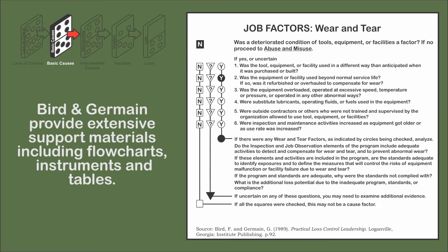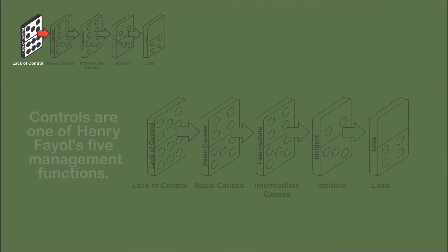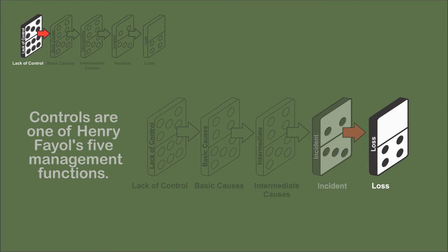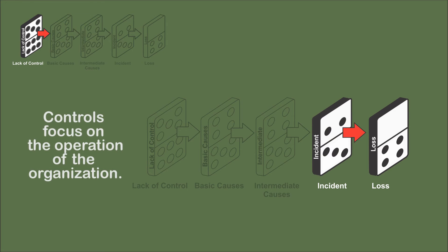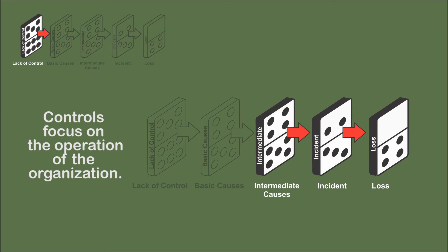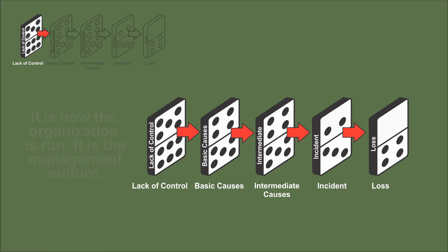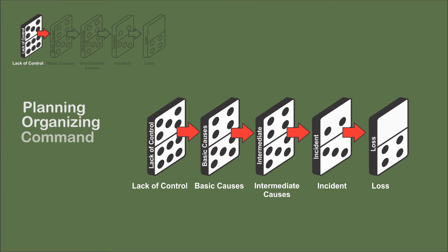Lack of management control emphasizes the management policies, practices, and procedures of the organization. It is how the company is run and defines the management culture. Byrd and Germain note that control is one of Henry Fayol's five management functions of planning, organizing, commanding, coordinating, and controlling. Accident prevention emphasizes control.